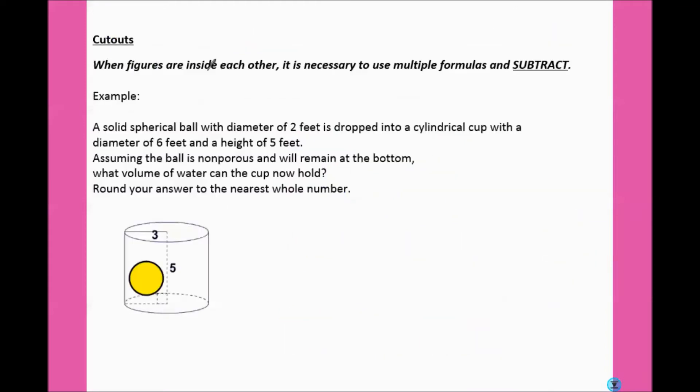Cutouts: when figures are inside each other, it is necessary to use multiple formulas and subtract. Here, we have a spherical ball that has a diameter of 2. It is dropped into a cylindrical cup with a diameter of 6, so all the way across is 6, and it told us it's halfway to 3, and a height of 5. Assuming the ball is non-porous, which means it won't suck up any of the water, and will remain at the bottom, what is the volume of water the cup can hold now?